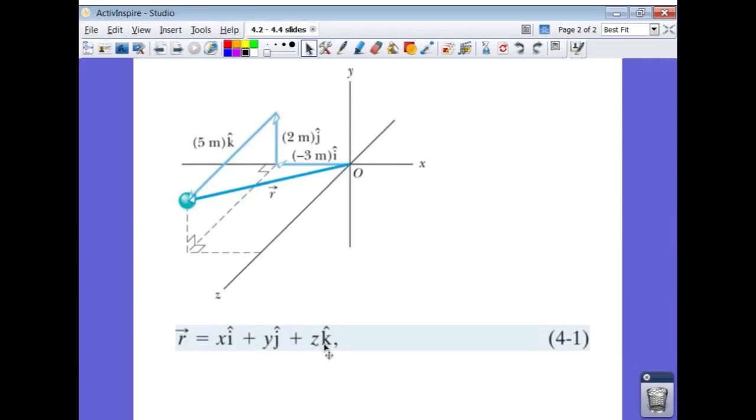Remember the i, j, k are called unit vectors. They just show direction, i indicating the x direction, j indicating the y direction, and k indicating the z direction. And then this x, this y, and this z are the magnitudes of those components, so negative three, two, and five.